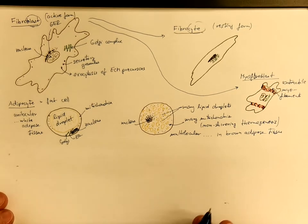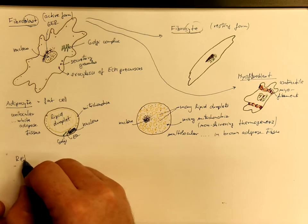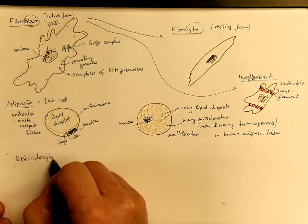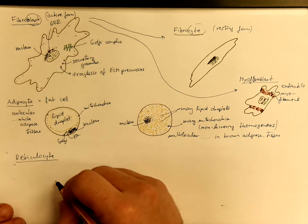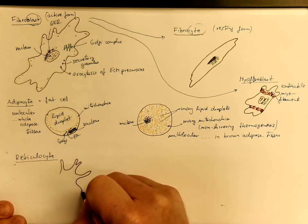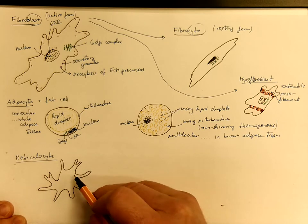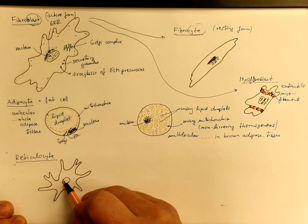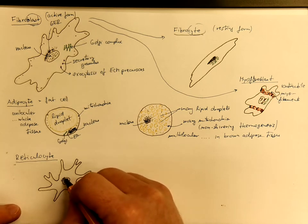Another cell type that we should mention is reticulocyte. These reticulocytes have many processes of various lengths which might be branched, and they kind of resemble the fibroblasts. However, they are forming a three-dimensional network with their processes. The nucleus contains mostly euchromatin and we have the obligatory organelles for synthesis.